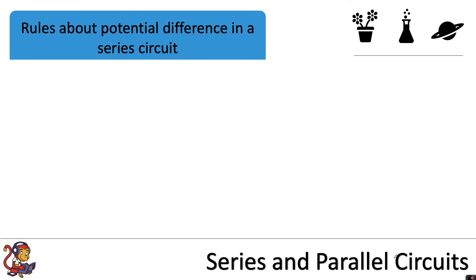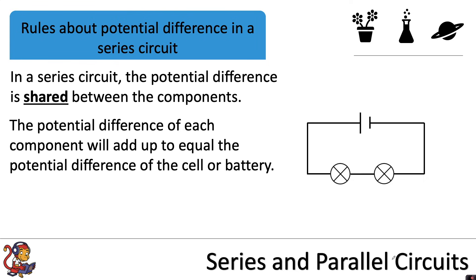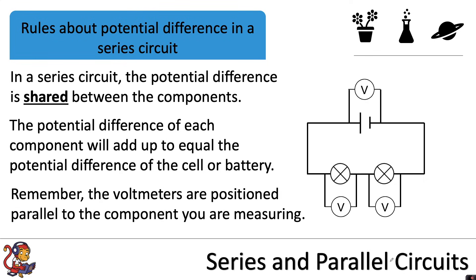Now we'll move on to rules about potential difference, starting with the series circuit. In a series circuit the potential difference is shared between components, and each component's potential difference adds up to equal the potential difference of the cell or battery. Voltmeters are positioned in parallel with the components you are measuring — they have separate wires connecting either side of the component. You do not place a voltmeter in the same loop as everything else, whether it's a series or parallel circuit.